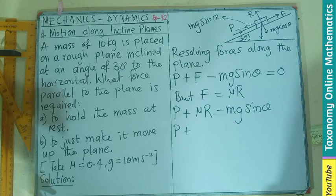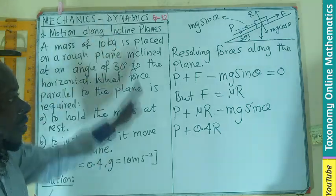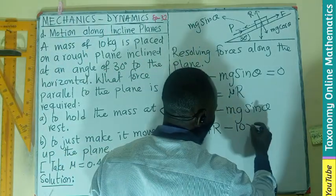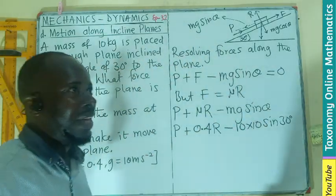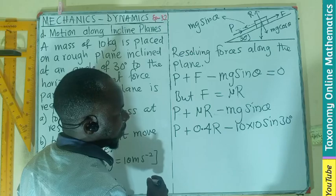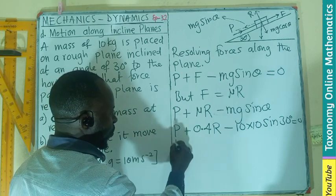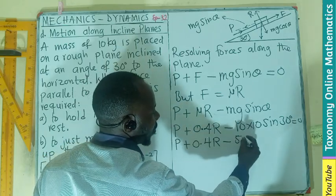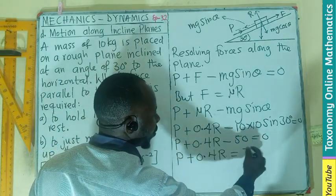P will be added to coefficient of friction as 0.4 times the normal reaction, which is unknown in this case, minus the mass of the body, which is 10, times force of gravity 10, times the sine of 30, which is 30 degrees. I know sine of 30 will be half. 10 times 10 will be 100, half of that will be 50. So P plus 0.4R minus 50 equals 0, so P plus 0.4R equals 50.